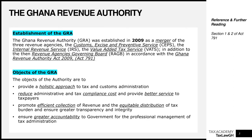What are the objects of the GRA when it was formed? This can be found in Section 2 of Act 791. The objects are straightforward. The first is to provide a holistic approach to tax and customs administration — creating one body that makes it easy to administer taxes in Ghana.